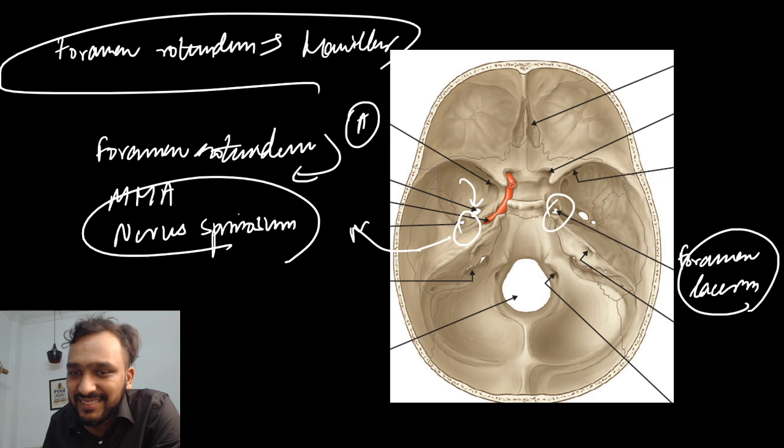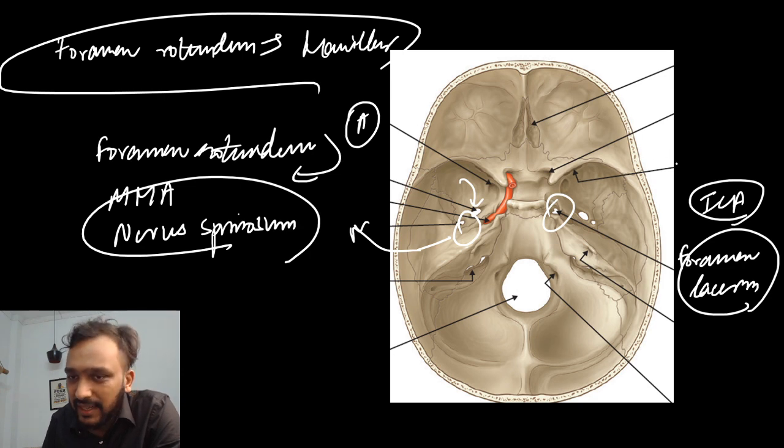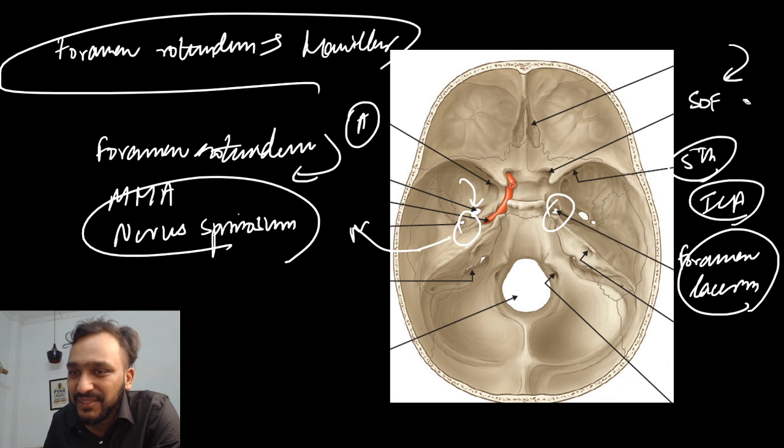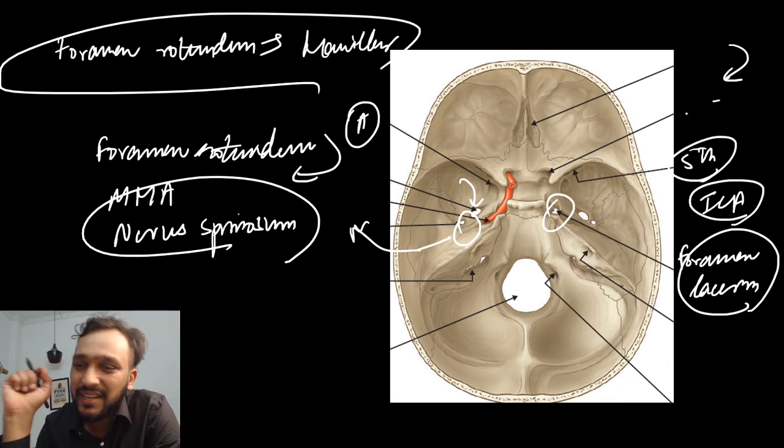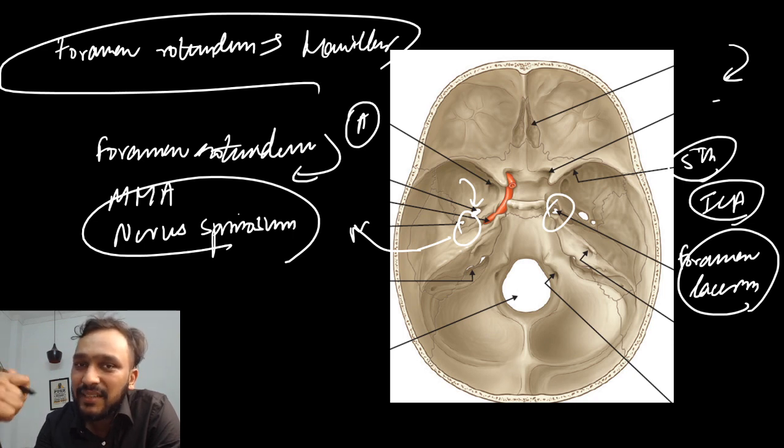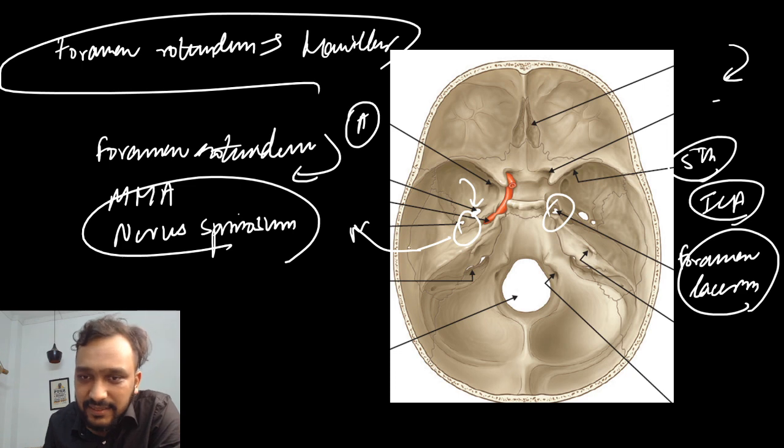And the fifth important structure that you should know that I have marked here is your superior orbital fissure. The structures passing through the most lateral parts of the superior orbital fissure can be remembered with the simple mnemonic LFT: lacrimal nerve, frontal nerve, and trochlear nerve.